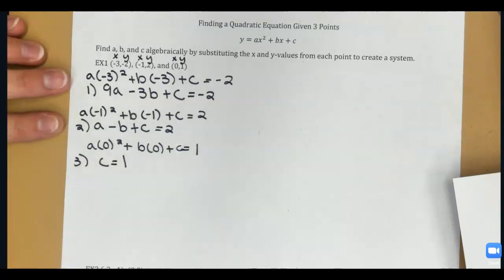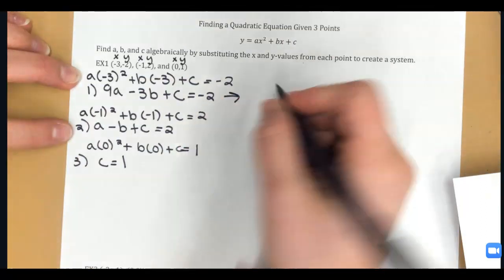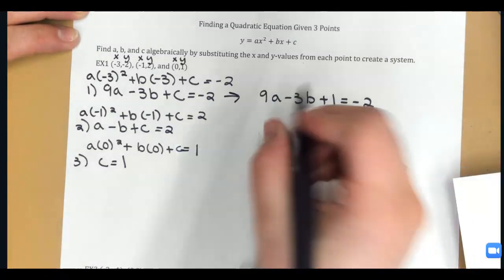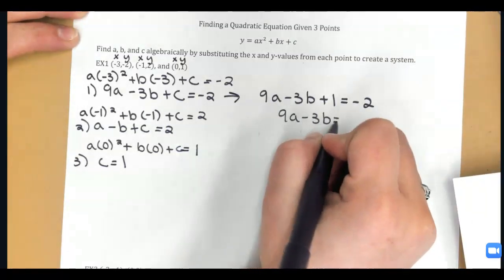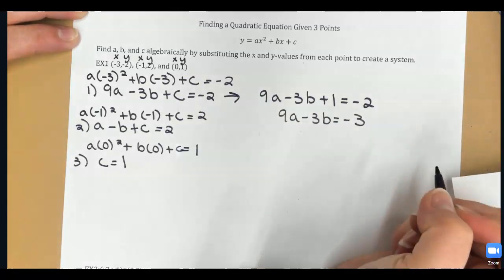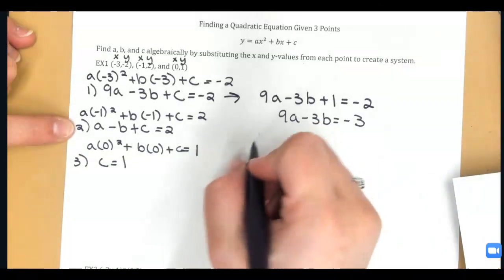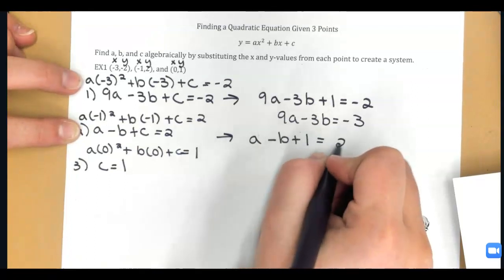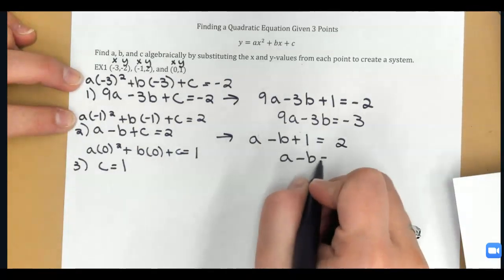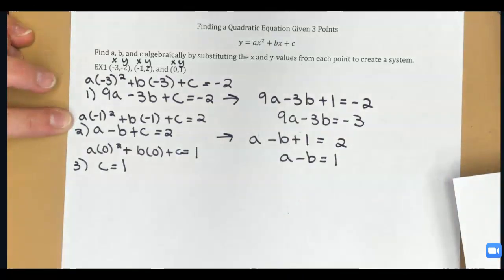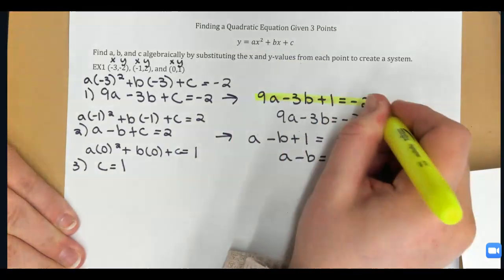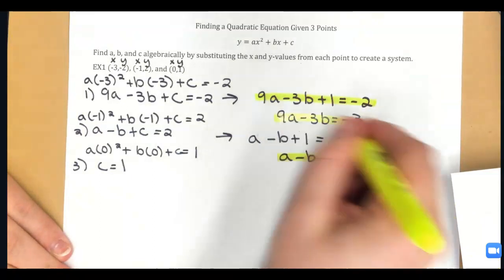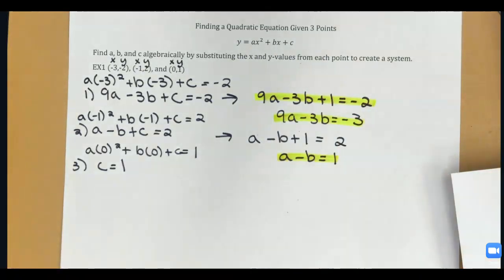Now I just have a two-variable system. Plugging C equals 1 into equation 1: 9A minus 3B plus 1 equals negative 2, which becomes 9A minus 3B equals negative 3. Plugging C equals 1 into equation 2: A minus B plus 1 equals 2, which becomes A minus B equals 1. So I now have these two equations to work with to find A and B: 9A minus 3B equals negative 3, and A minus B equals 1.